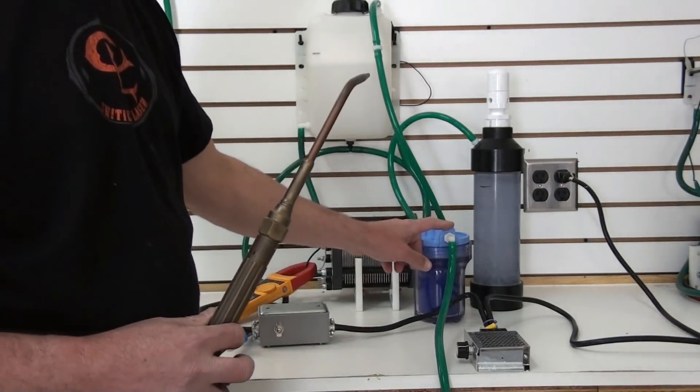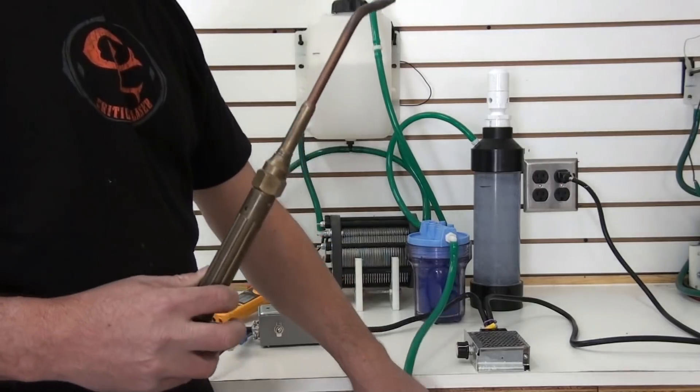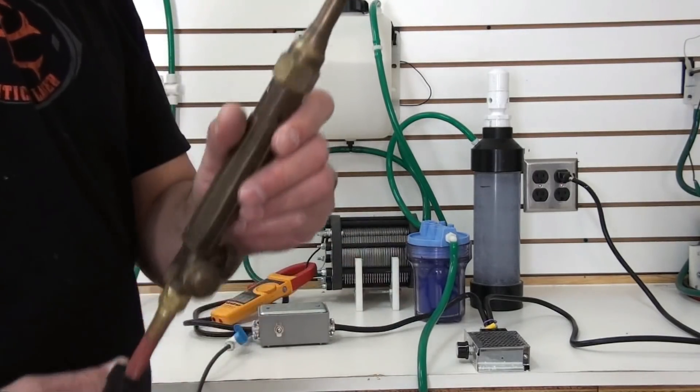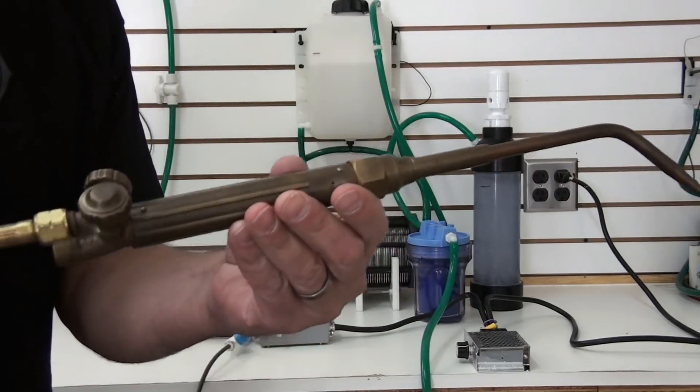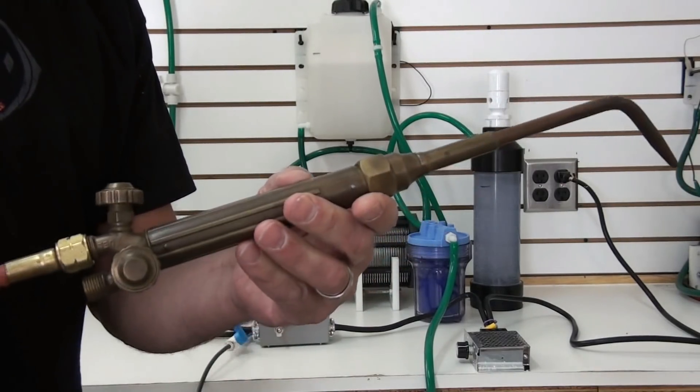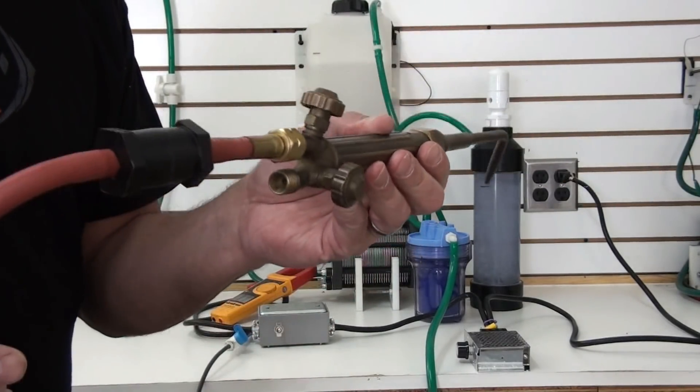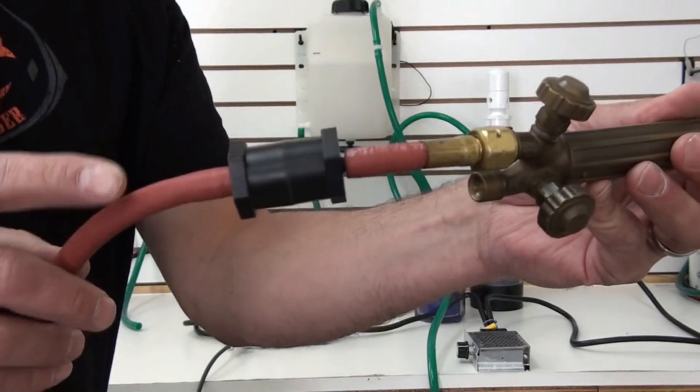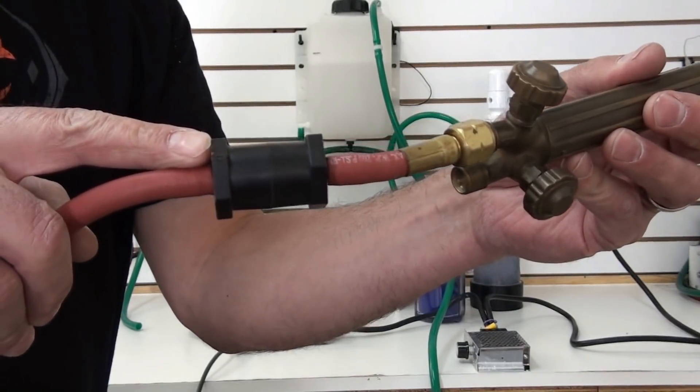Then if we come, our output for the gas is here, come down our hose and into our torch. This is just a basic welding torch you can buy just about anywhere. We also have another safety device. This is our small flashback arrestor.